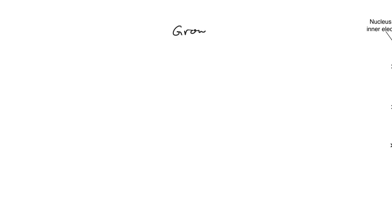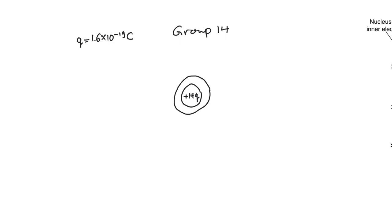Silicon is an element of group 14 of the periodic table, which means it has 14 protons and 14 electrons. If we draw a classical model, the nucleus has a charge of plus 14q, where q is the charge of an electron or proton — 1.6 times 10 to the power of minus 19 Coulombs. This nucleus is surrounded by 14 electrons to balance out the 14 protons.